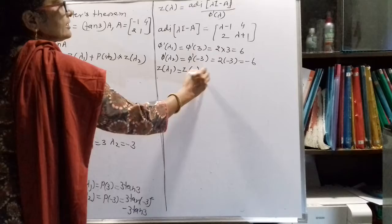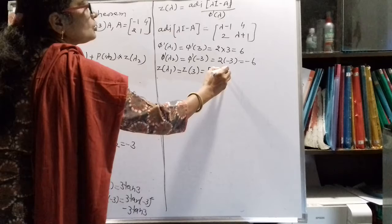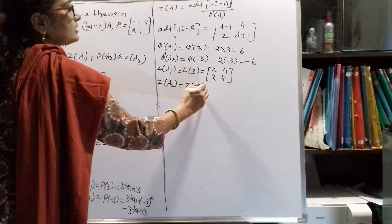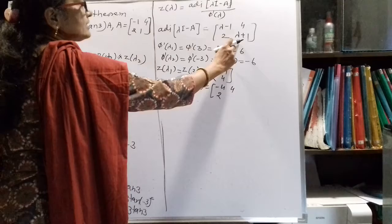So Z(λ₁) = Z(3): substituting λ = 3 into the adjoint of (λI − A), we get the diagonal entries 3−1 = 2 and 3+1 = 4, divided by φ′(3) = 6. For Z(λ₂) = Z(−3): substituting λ = −3 gives diagonal entries −3−1 = −4 and −3+1 = −2, divided by φ′(−3) = −6.